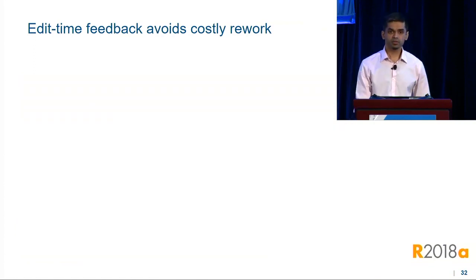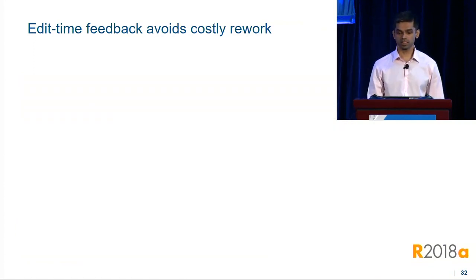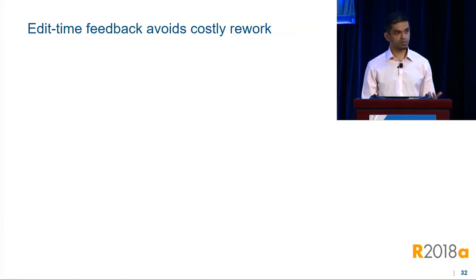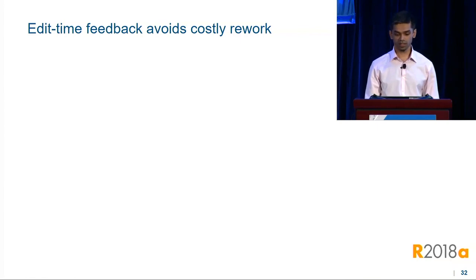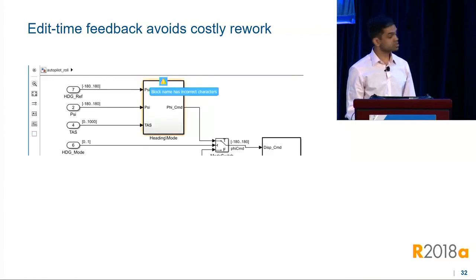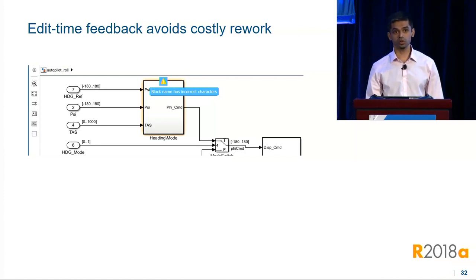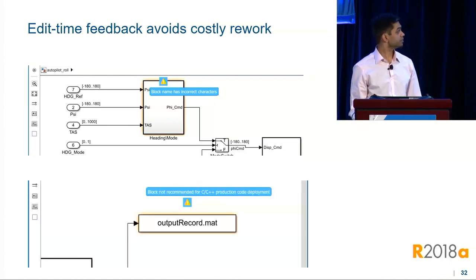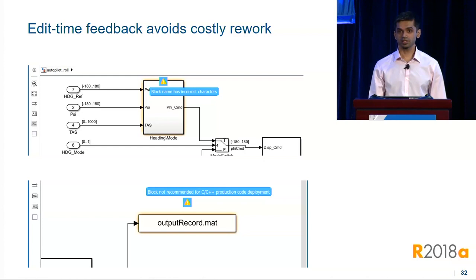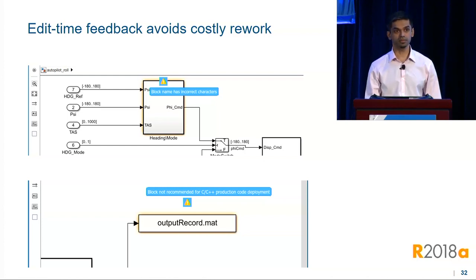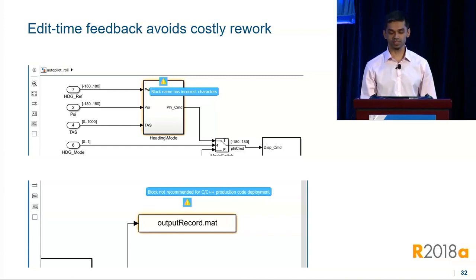Two pieces of feedback we've heard from many modelers is that they don't know if a particular block is supported for code generation, or if the identifiers used for that block are compatible with code generation. So we've integrated two edit-time checks into the code perspective for code gen support and identifier validity. This means that you catch these errors up front — you don't have to generate code or run Model Advisor to figure out the issue.